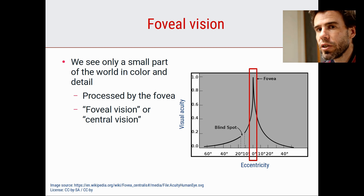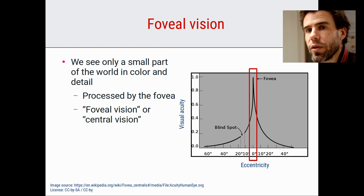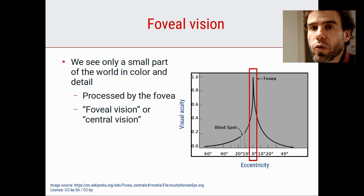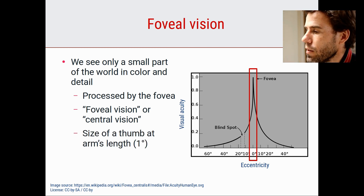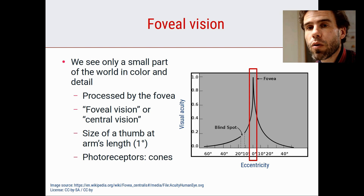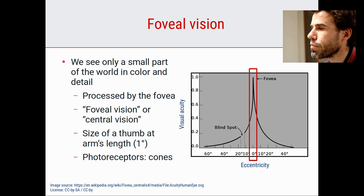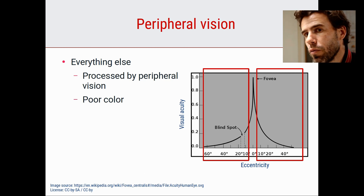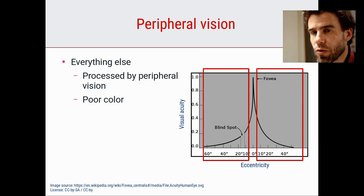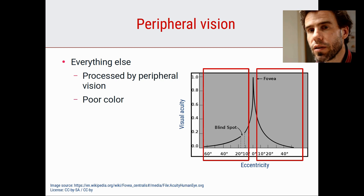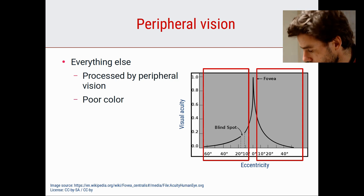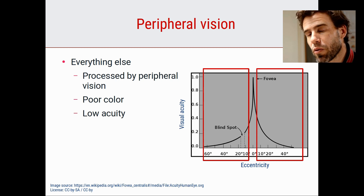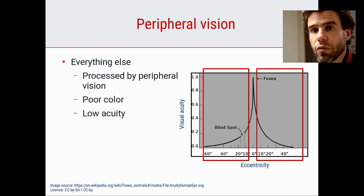The fovea is approximately the size of your thumb held at arm's length - about one visual degree. Everything else is processed by peripheral vision, where we have poor color vision and low visual acuity. There are fewer cones in the periphery, and the rods there are bigger and spaced further apart. Multiple rods converge on a single retinal ganglion cell, which groups information together and transfers it to the brain - causing loss of spatial information and low acuity.